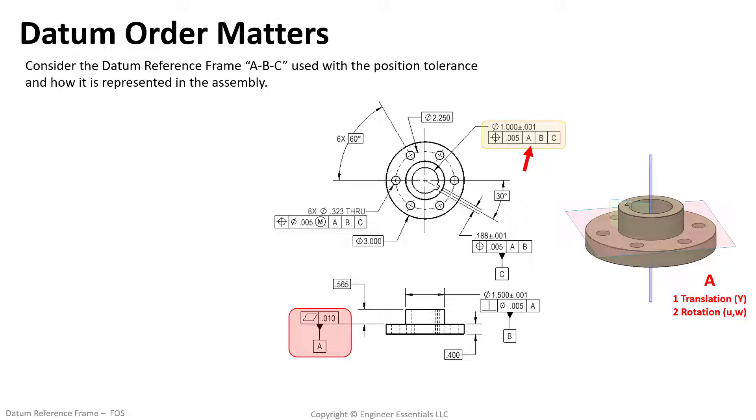On this new part datum feature A once again is a plane being controlled by flatness. One translation and two rotations are locked down. Datum B is this boss here. The way that the datum reference symbol is placed indicates that this is a feature of size. What this means is the datum feature is the imperfect tangible surface of that boss, but the datum is the theoretically perfect axis of that cylinder, shown here as the bluish purple axis. We know that a cylinder can potentially lock down two translations and two rotations. But since A was the preceding datum all that is left for the cylinder to lock down is two translations.